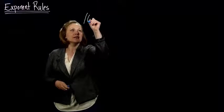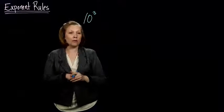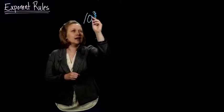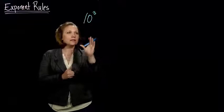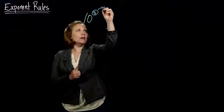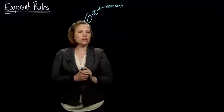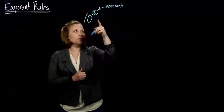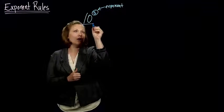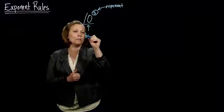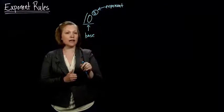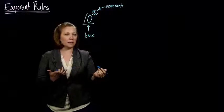So, if I wrote 10 to the third power, with this little 3 and a big 10, the 3 is what we call an exponent. The exponent gives us some special information. It tells us how many times to take what we call the base number, which is our 10 here, the big number, and multiply it by itself.